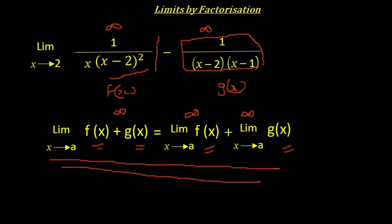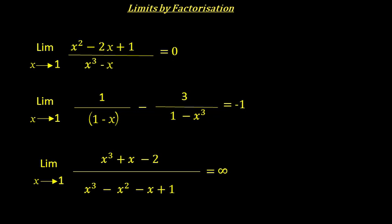We'll leave you with three problems to try out. You need to use limit by factorization and find the limit as x tends to 1 for three rational expressions. In each of these cases the limits tend to 0, -1, and infinity respectively. Apply this concept, try out the problems, and if you need help watch the next video where we'll work out each one. Thank you.